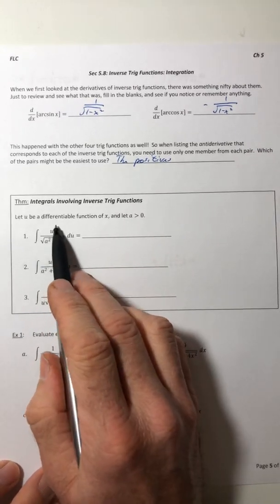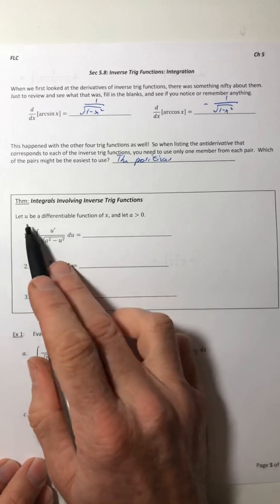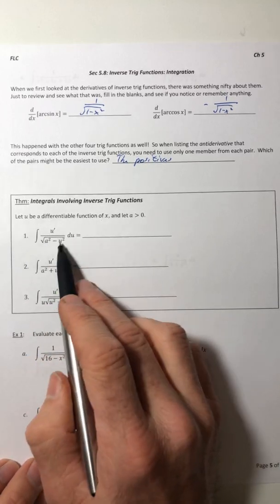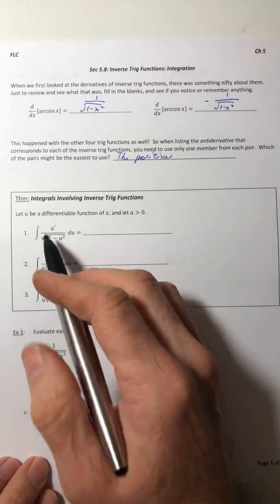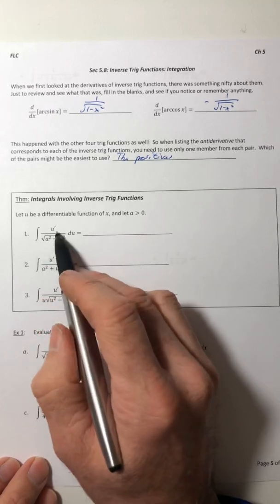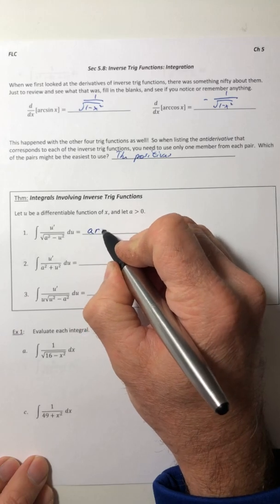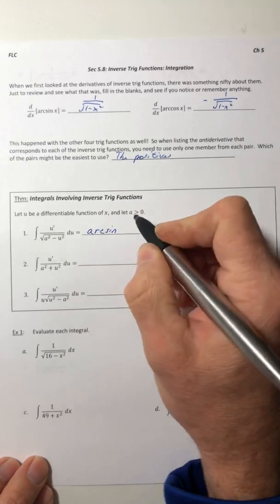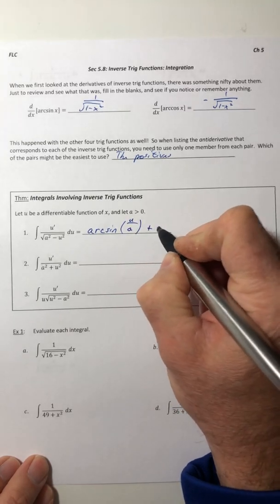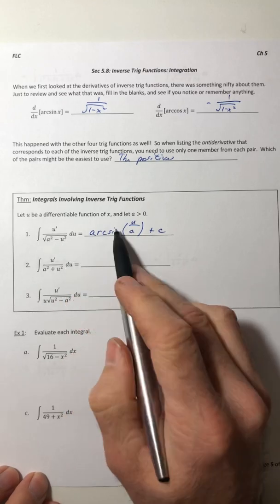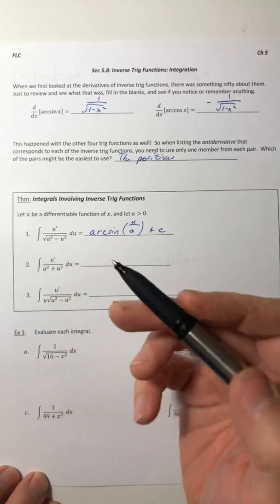So these are the three that we're really just going to focus on. We have u prime over root a squared minus u squared. The u is the actual function and the a is just a constant. If you have this, that is going to integrate into arcsine of u over a plus c. Notice that it's not u squared over a squared, it's just u over a. You got to take these two things and square root them.